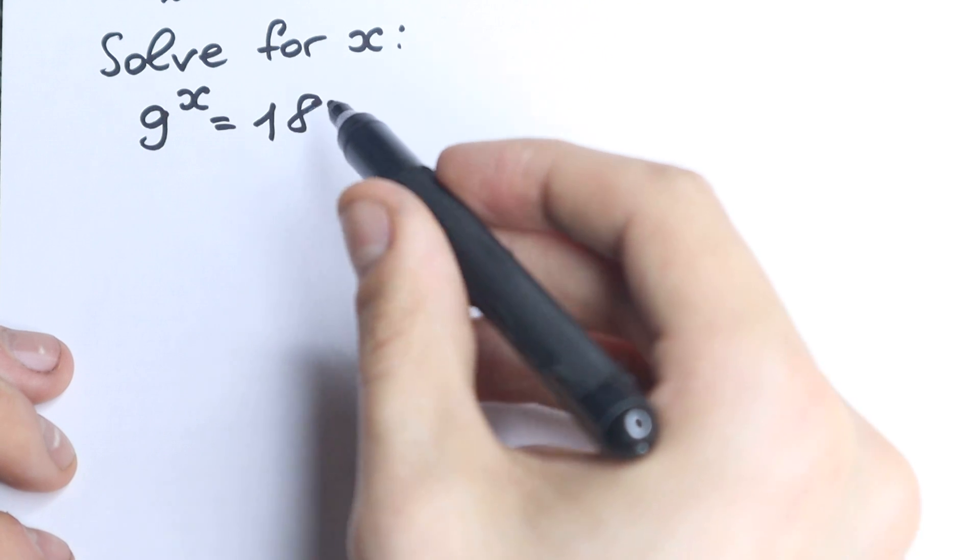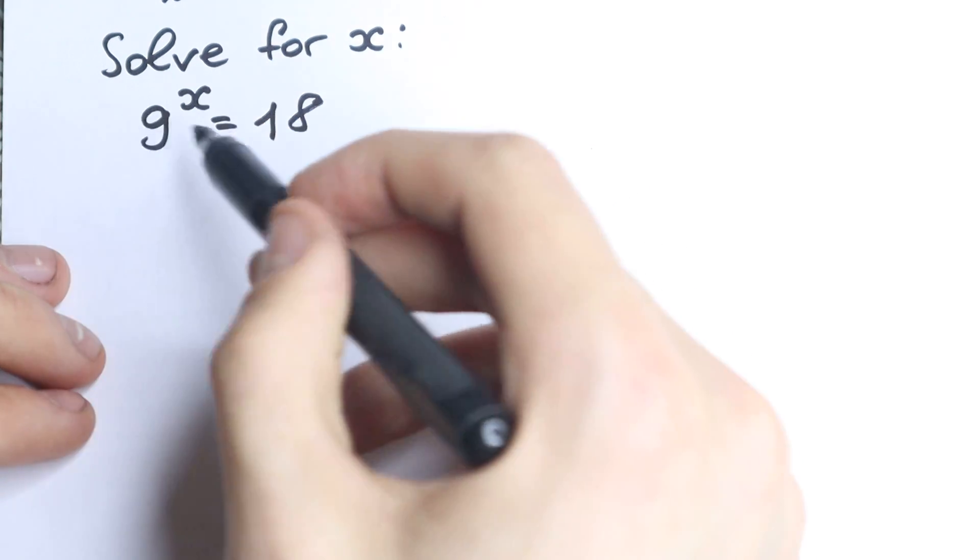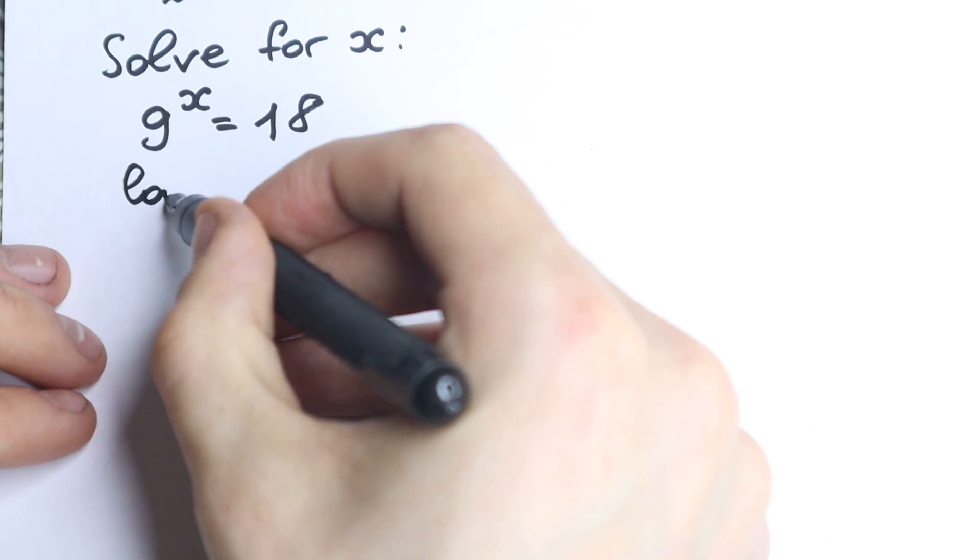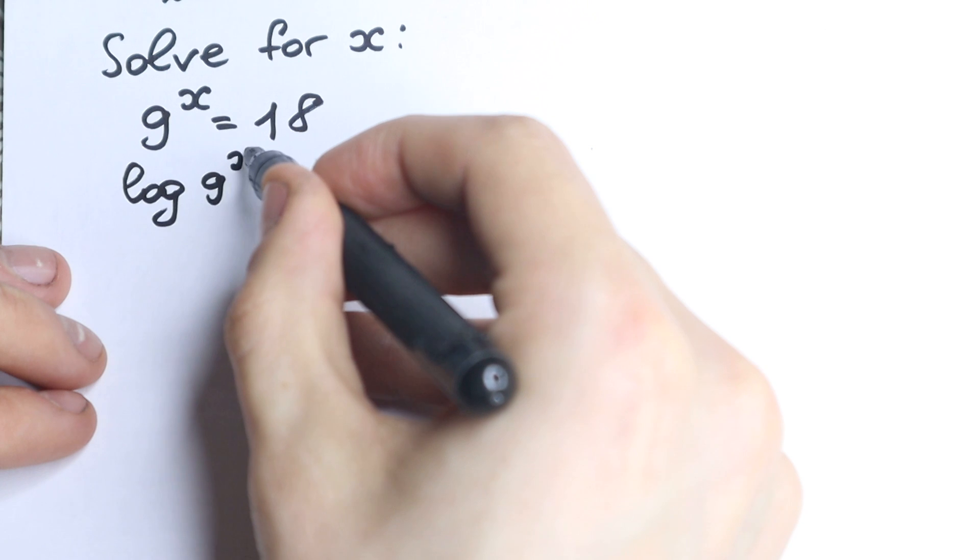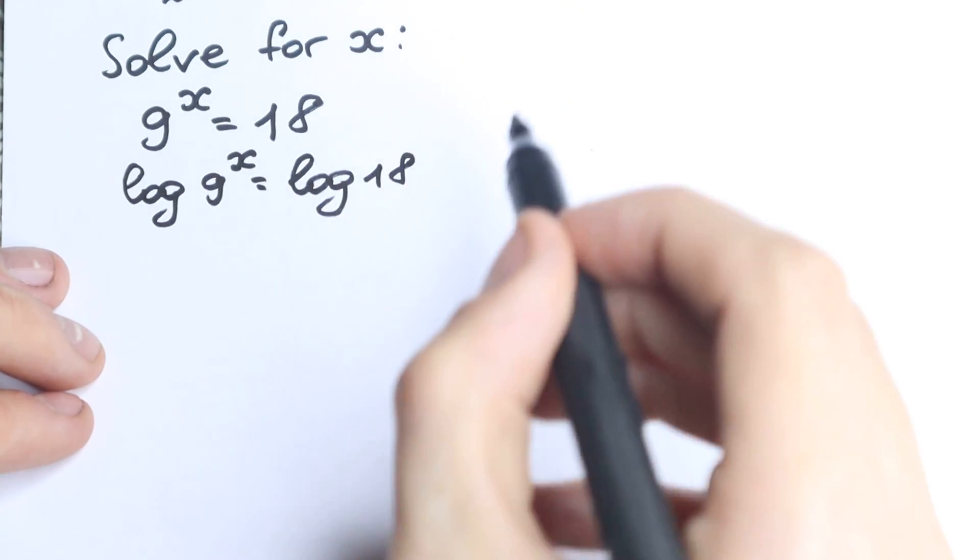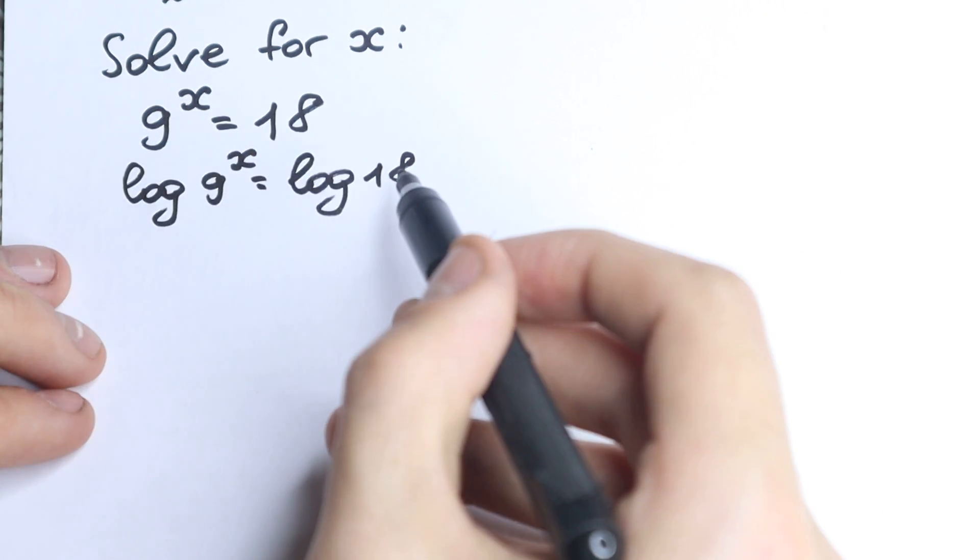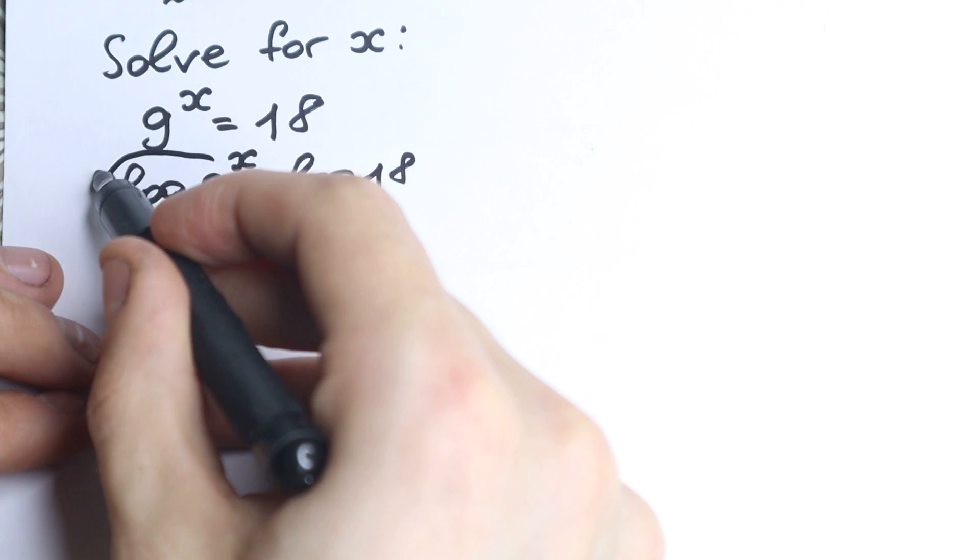So 9^x = 18. If you know a little bit about logarithms, it's really great because x will jump right here. Take a look: we have log(9^x) = log(18). If you apply log on both sides, we change nothing because we do this on both sides. This x jumps right here—this is the main log property. The power always goes right here behind the log.